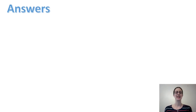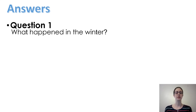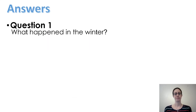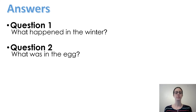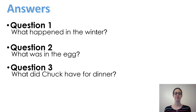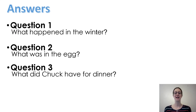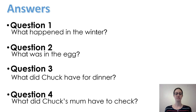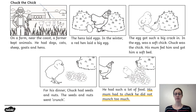Fantastic — now we can go through the answers together. Question one: what happened in the winter? The answer is: in the winter, a red hen laid an egg. Question two was: what was in the egg? The answer is: in the egg was a soft chick. Question three was: what did Chuck have for dinner? The answer is: for his dinner, Chuck had seeds and nuts. Question four was: what did Chuck's mum have to check? The answer was: his mum had to check he did not munch too much.